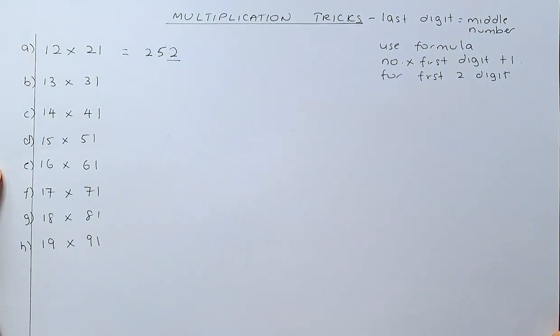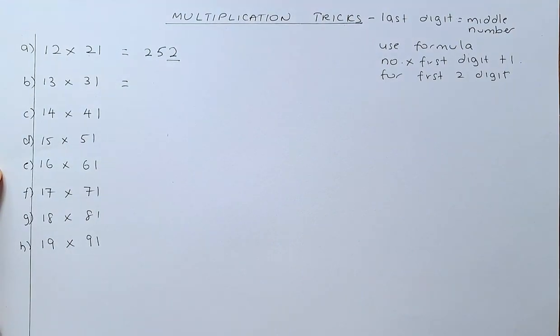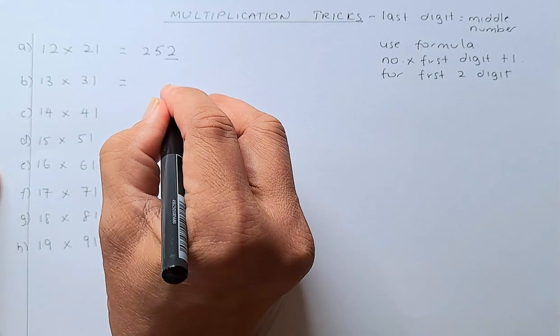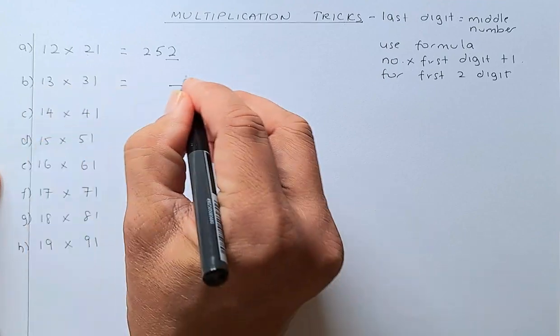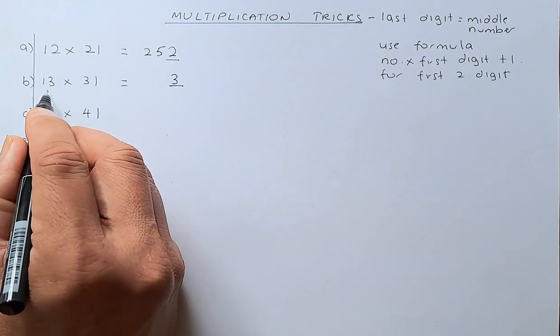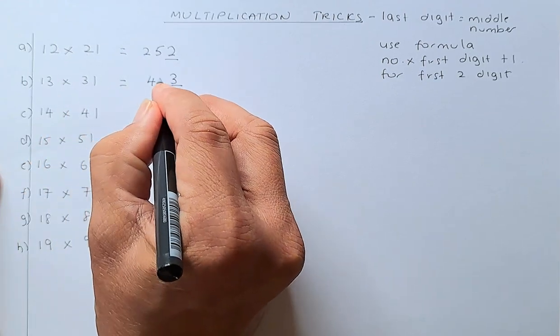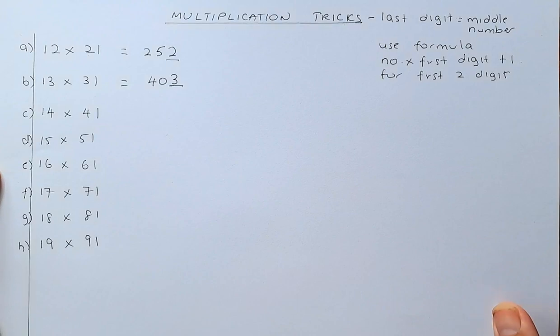So, we shall do a couple more and before long, you can do it instantly. So, again, we shall do the second example. 13 times 31. The last digit is going to be the middle number which is 3. And then, you're going to multiply 13 by 3 which is 39 and then plus 1 that will be 40.